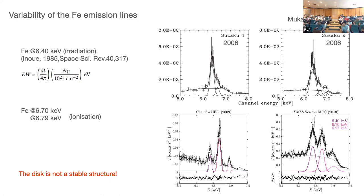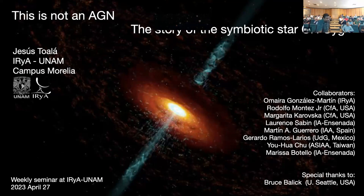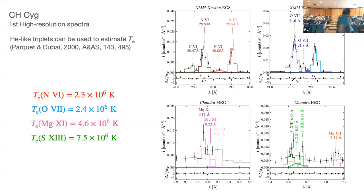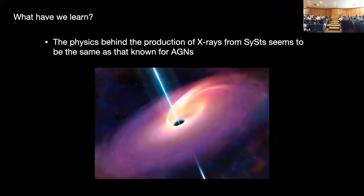A final comment: the plural of AGN is AGN. And what's the furthest that there are X-ray spectra for symbiotic systems? There are sources in the SMC. I'll talk to you later about that. Excellent — it's been a very engaging discussion, a lot of heckling. Let's thank everyone.